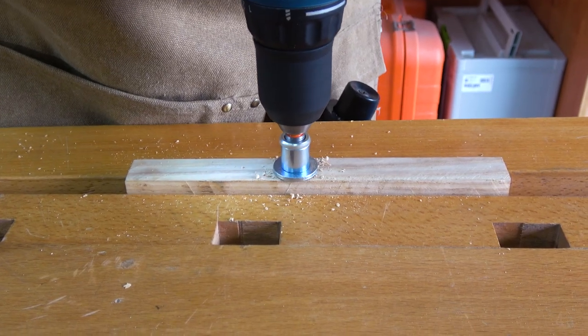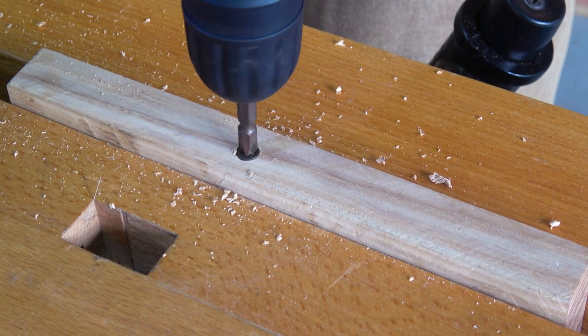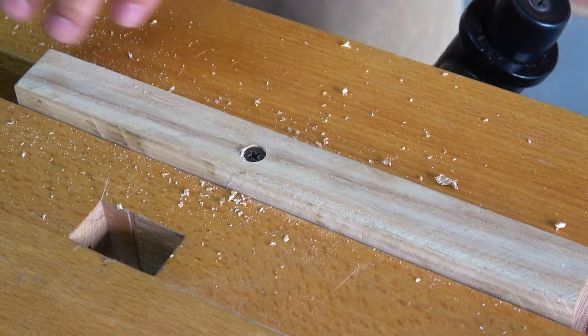Its chamfering function ensures that the end of the screw is flush with the surface of the wood. Meanwhile, the Adjustable Depth Stop controls the depth of the pre-punched holes.